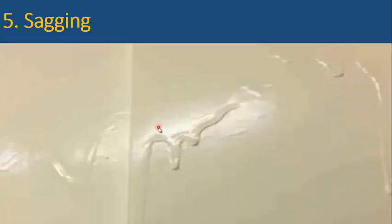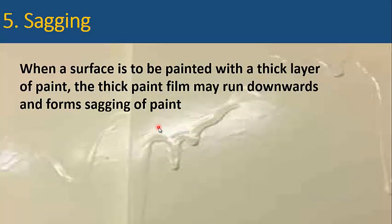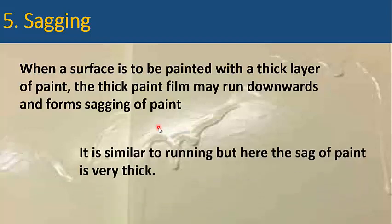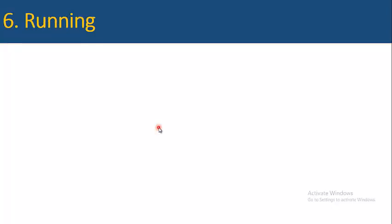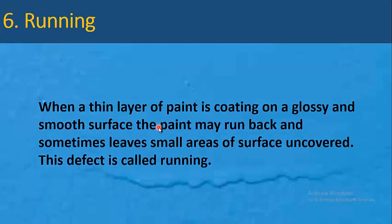Sagging: when a surface is to be painted with a thick layer of paint, the thick paint film may run downwards and forms sagging of paint. It is similar to running, but here the sag of paint is very thick. Running: when a thin layer of paint is coated on a glossy and smooth surface, the paint may run back and sometimes leave small areas of surface uncovered. This defect is called running.